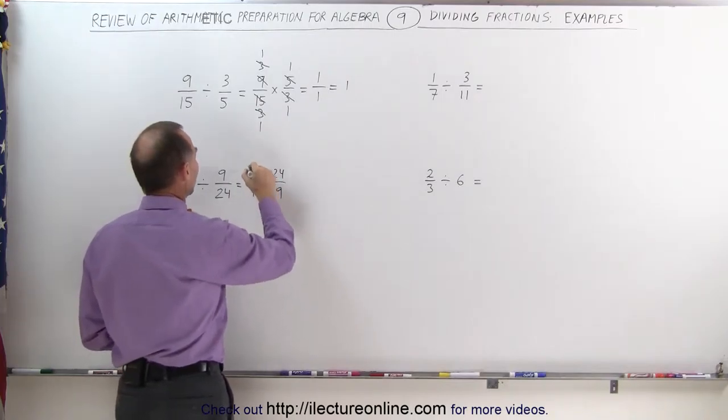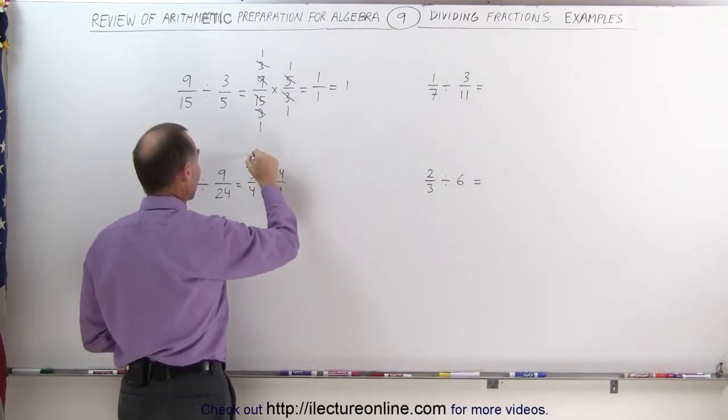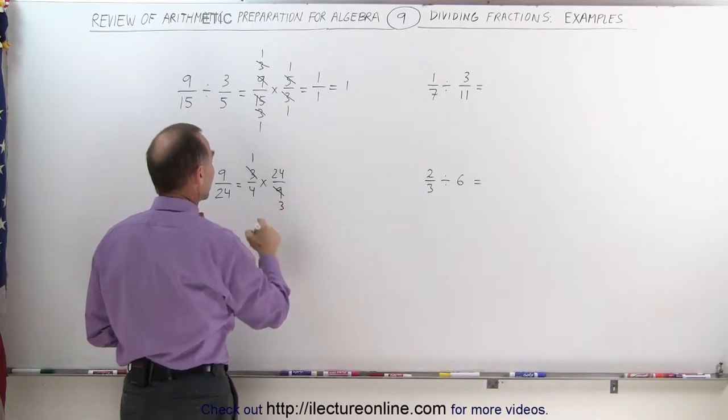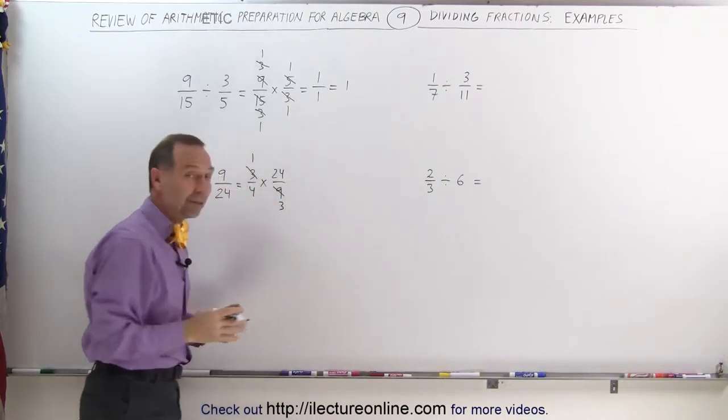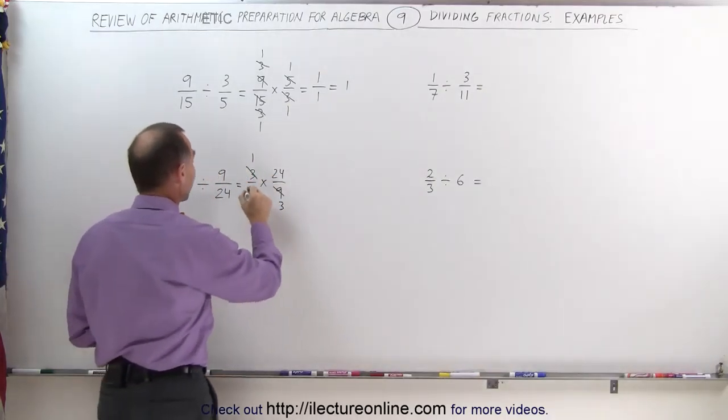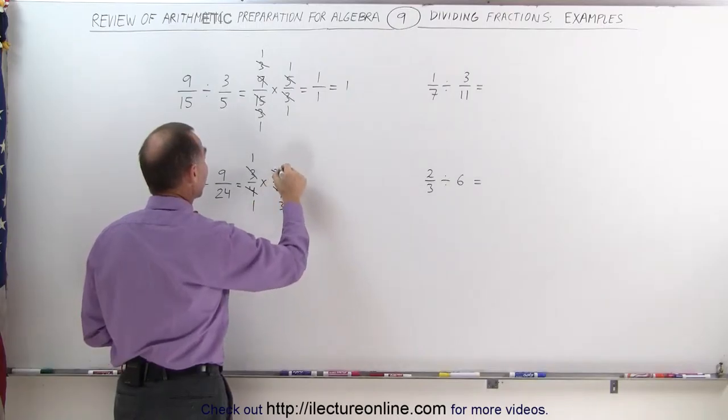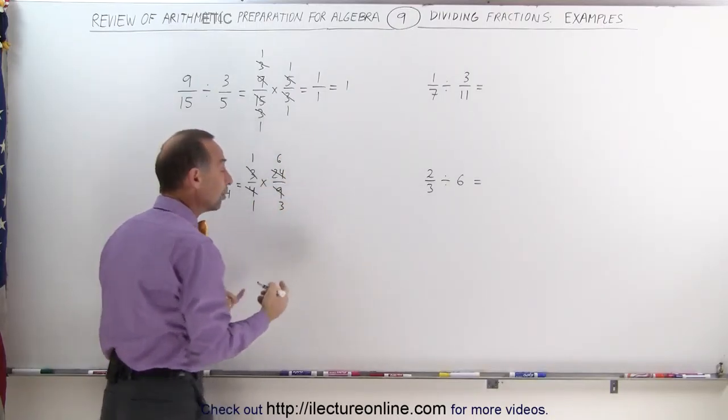3 and 9 are both divisible by 3, so 3 divided by 3 is 1, 9 divided by 3 is 3. With 4 and 24, they can both be divided by 4: 4 divided by 4 is 1, 24 divided by 4 is 6.